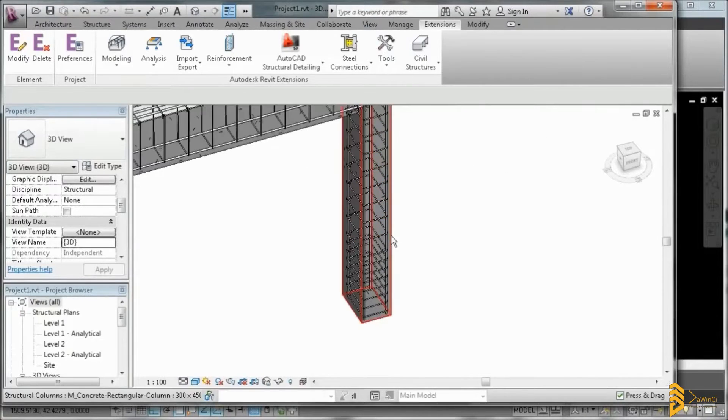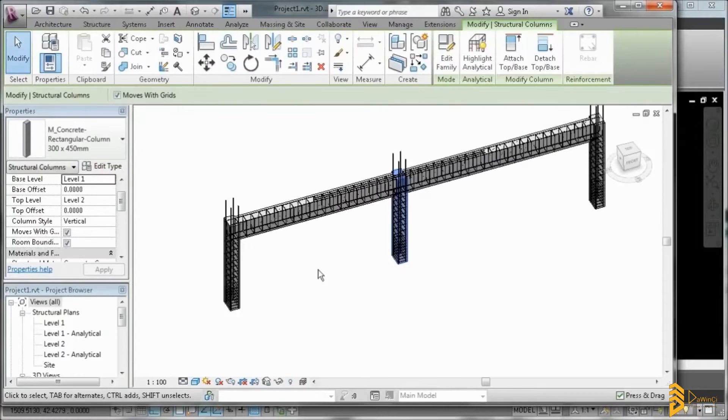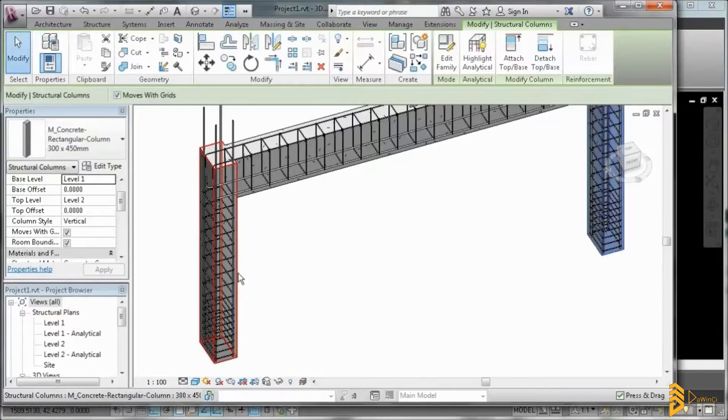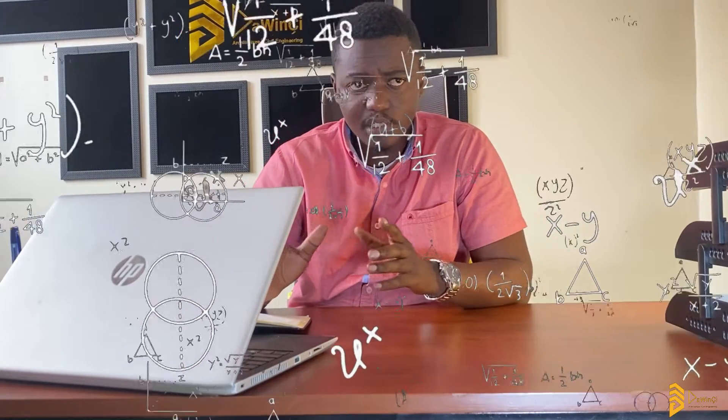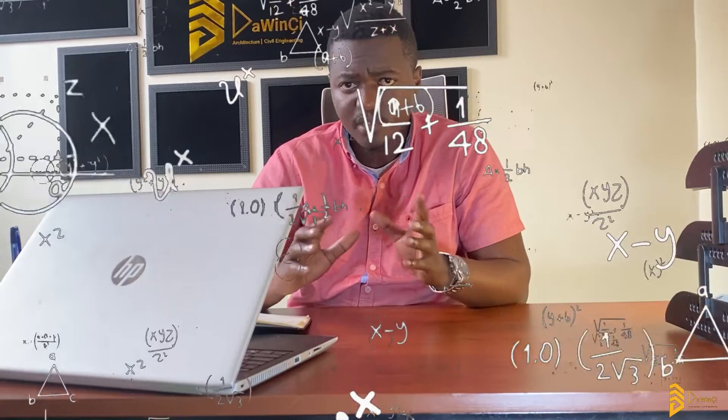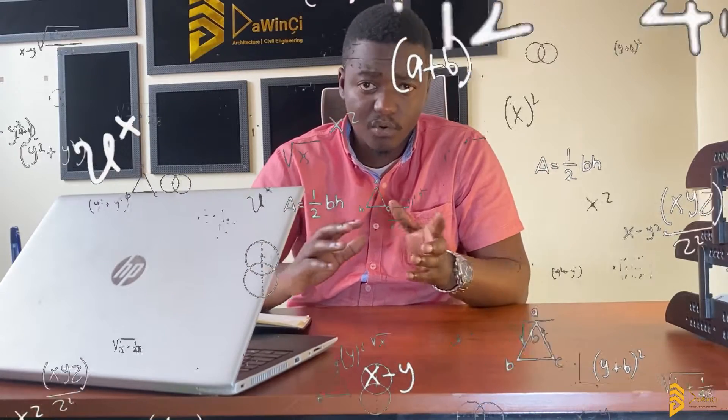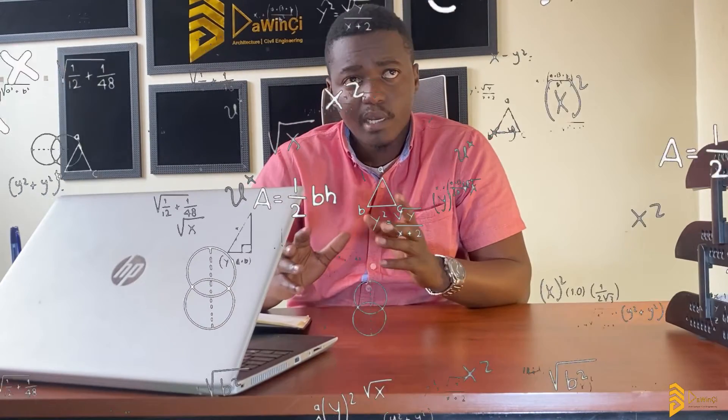The architectural design requires a set of technical skills and a lot of creativity to pull off. Whereas for a structure design or structural drawings, it requires a lot of physics and mathematical calculations.